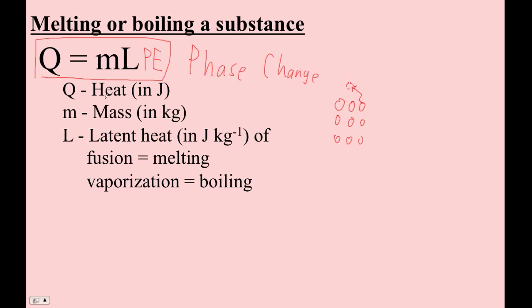Right now, just understand that it's basically how much mass you have multiplied by something called the latent heat. And then we could call it the latent heat of melting or we could call it the latent heat of boiling, but that would be too obvious. So we call melting fusion. The latent heat of fusion is for melting.